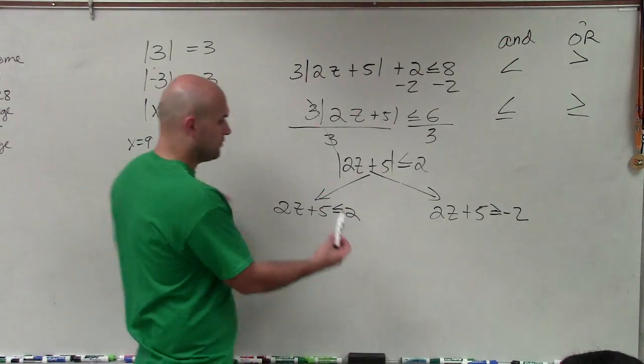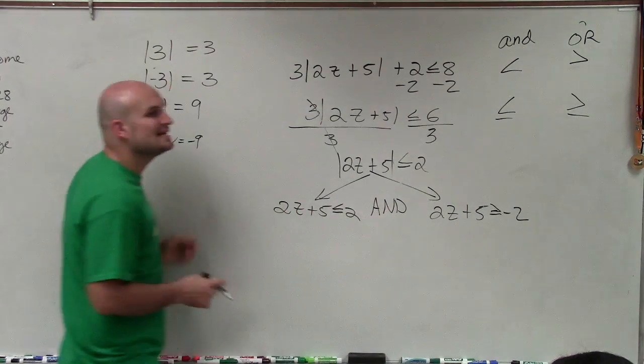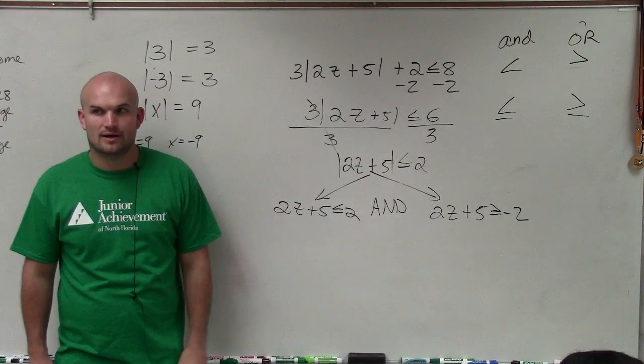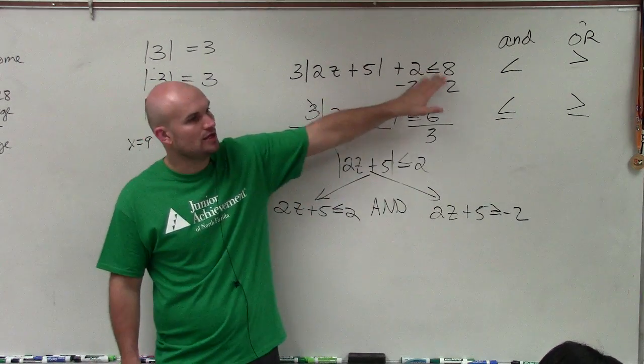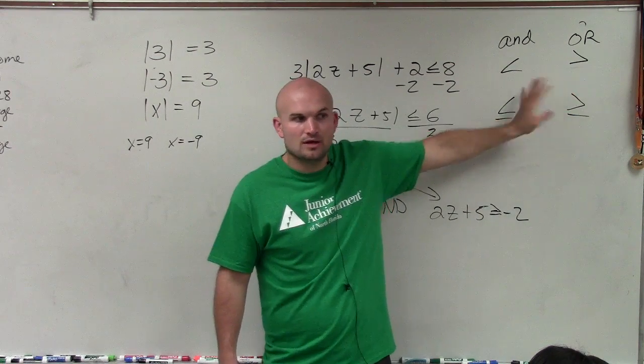The other step is, notice my original inequality was an AND, right? So when I create my two cases, I'm creating a compound inequality of the form AND, all right? Because that's with my original inequality. So it's going to be very important you guys know the distinction between these two for your absolute value.